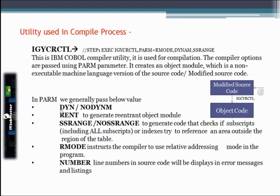There are many options we specify in PARM. For example, we give DYNUM or NODYNUM, which decides whether there will be a dynamic call environment in the COBOL program or not. Then we give RENT or NORESIDENCY to generate a reentrant object module — we use this option in the case of CICS. Then we give SSRANGE or NOSSRANGE. By default there is NOSSRANGE. If you specify SSRANGE, it generates code that checks if a subscript or index tries to reference an area outside the table's bounds.